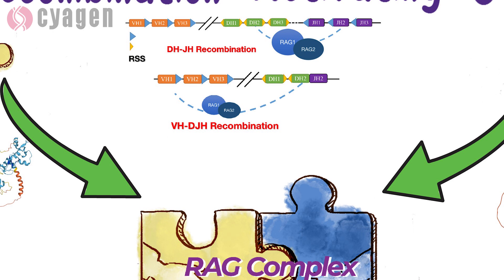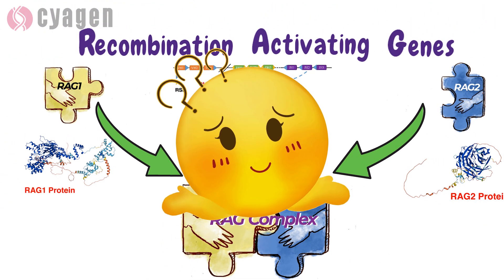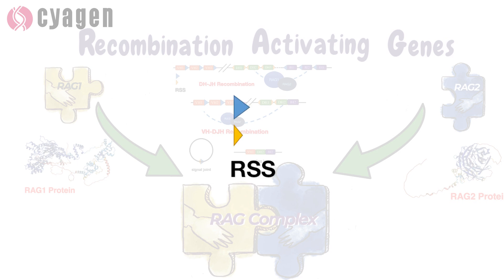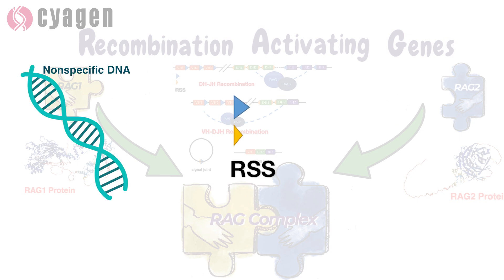The RAG complex plays an essential role in lymphoid cell VDJ recombination, which affects the production of highly diverse antibodies and T-cell receptors in B and T cells. These proteins have enormous diversity achieved by VDJ recombination.